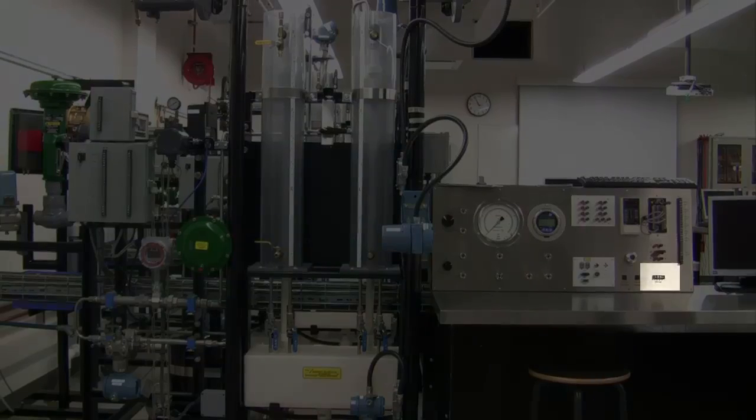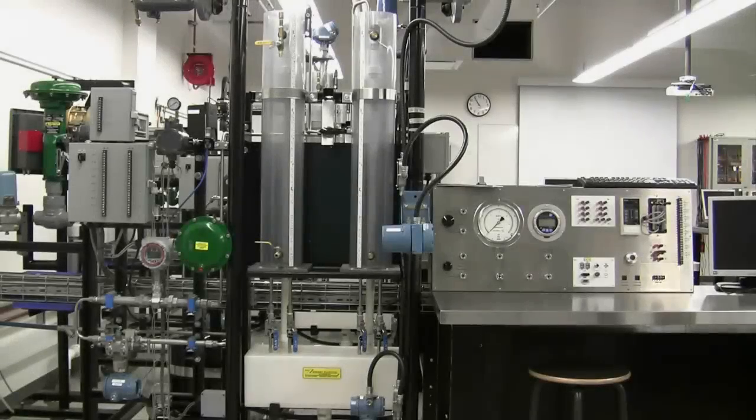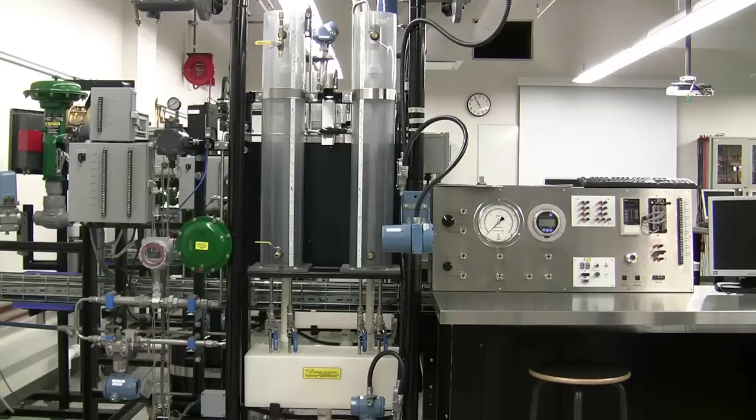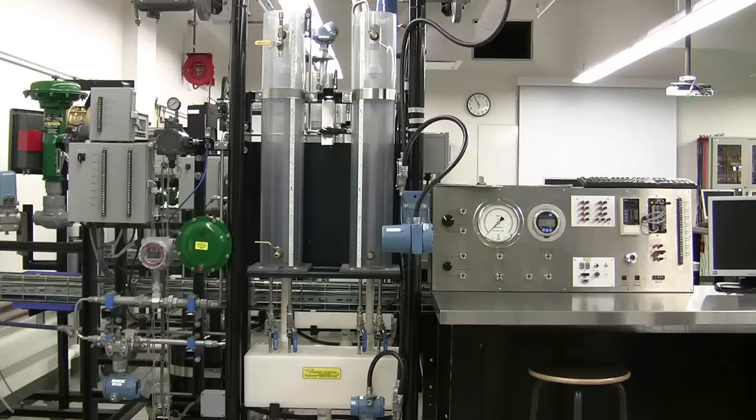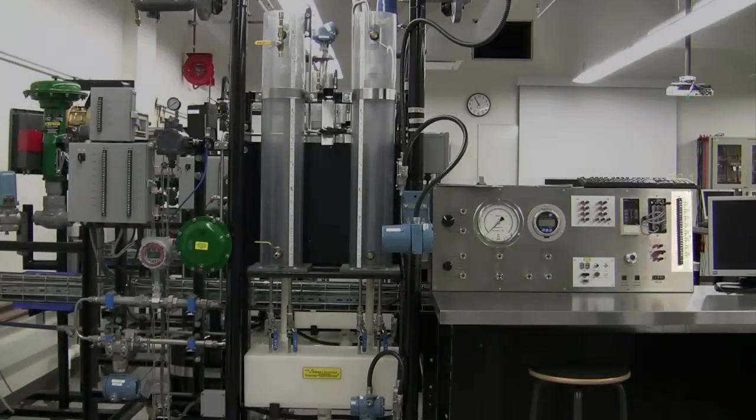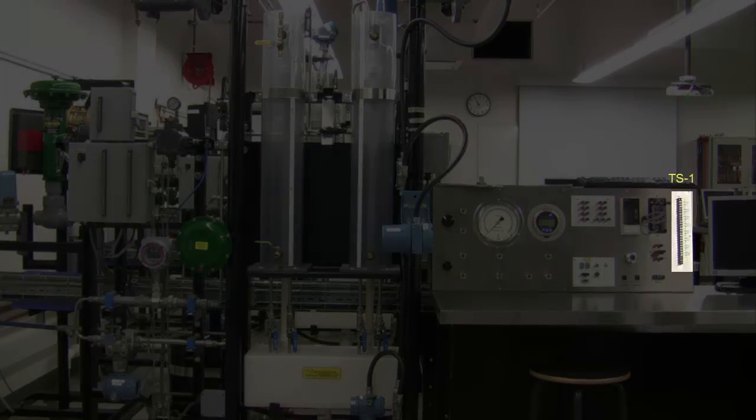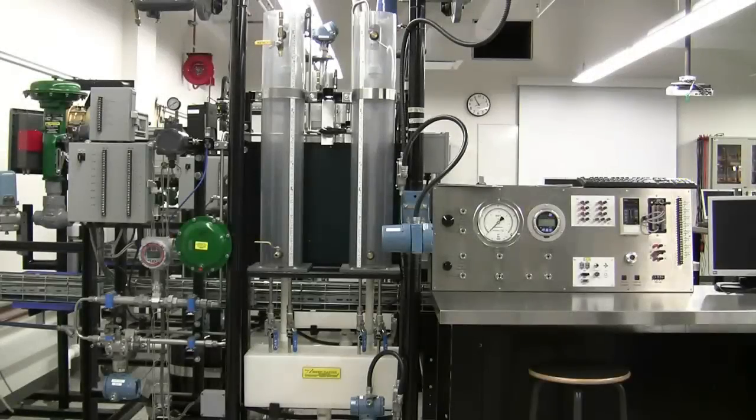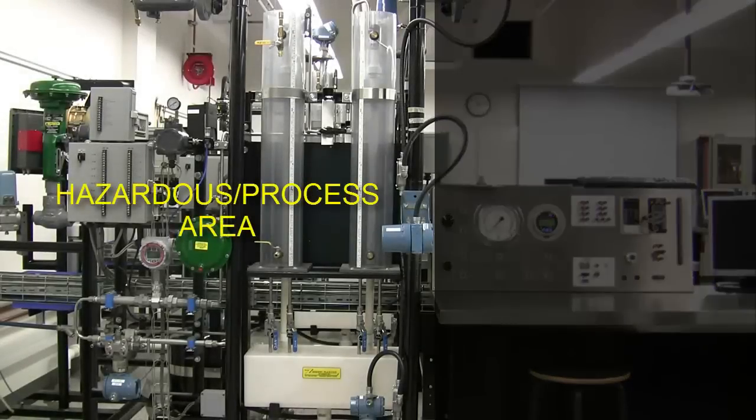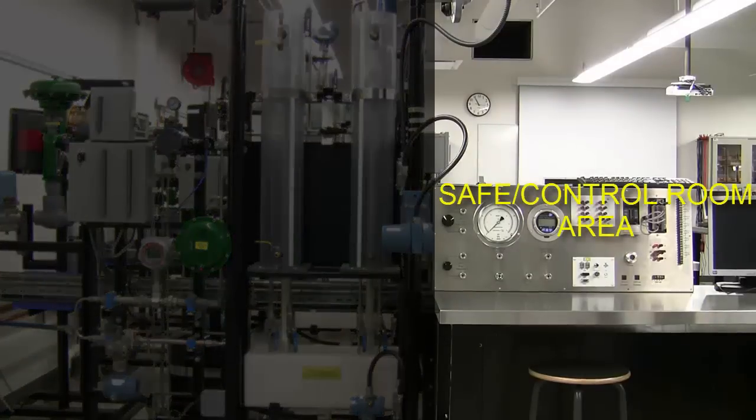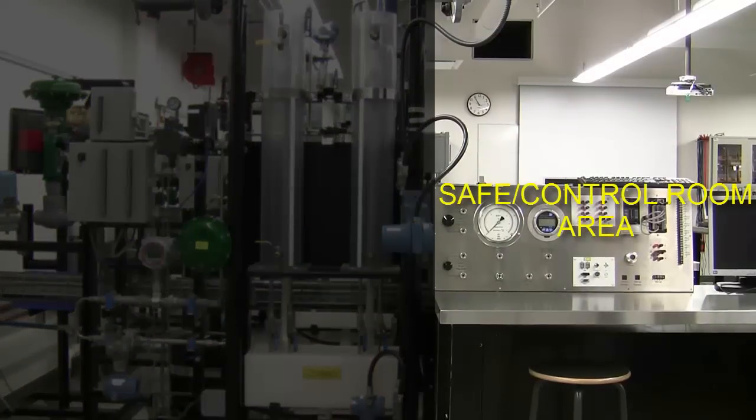The 24-volt power supply is mounted on the control panel and cannot be connected directly to the field junction box. A wiring path between the field junction box and the control panel has been provided. JB-1B on the field junction box is connected to TS-1 on the control panel. This layout is to simulate the hazardous side or process area versus the safe or control room area.